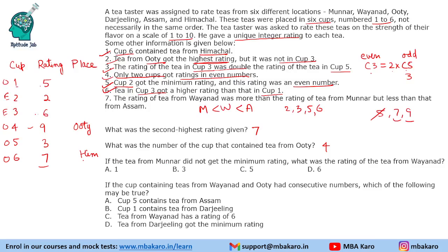If the tea from Munnar did not get the minimum rating, what was the rating of the tea from Vyanard? So Munnar does not get 2. We are left with 3, 5, 6 for Munnar, Vyanard, and Assam. Since M < W < A, Vyanard will get a rating of 5.